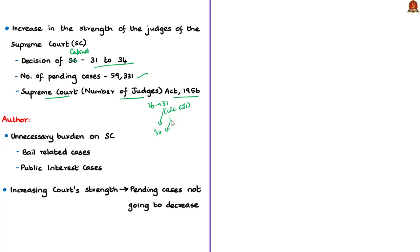The present Chief Justice of India, Mr. Ranjan Gogoi, had written to the Prime Minister highlighting the problem of low judge strength, stating he was unable to constitute enough Constitution Benches to interpret the Constitution and laws. The author of the editorial notes that the Supreme Court faces an unnecessary burden from bail-related cases, public interest cases, and High Court appeals. The author argues that merely increasing court strength will not reduce pending cases.